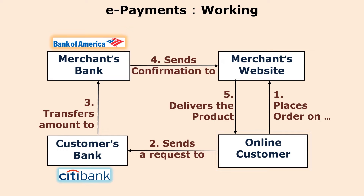Now let us understand how this electronic payment system works. There are four entities. The first entity is the customer, the second entity is the merchant, the third one is the merchant's bank account, and the fourth one is the customer's bank account. So customer, customer's bank, merchant, and merchant's bank — in total there are four entities, because the transaction happens among these four entities.